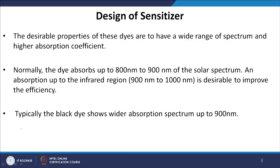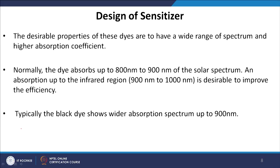N3, N749, and Z907 are the three dyes commonly used for fabricating DSSC devices. They fulfill all the design criteria for an optimum sensitizer. The desirable properties include a wide absorption spectrum with high absorption coefficient — normally absorbing up to 800–900 nm. Absorption extending into the infrared region (900–1000 nm) is desirable to improve efficiency. The black dye in particular shows a wide absorption spectrum up to 900 nm, which is why current research emphasis is on synthesizing black dyes for DSSC.